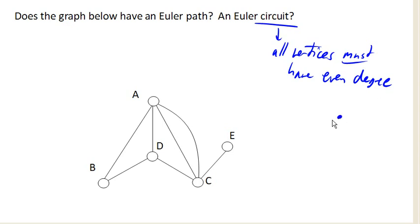And the idea is really simple. The idea is we need to make it so that every time we come into a vertex, we have a way out. So if I have another way in, I need another way out. And so we need even degrees on all of our vertices.